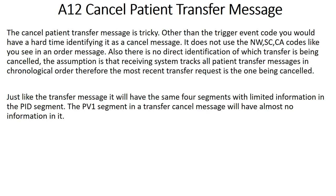The A12 cancel patient transfer message is a little tricky. Other than the trigger event code, you'd have a hard time identifying it as a cancel message — it doesn't use NW or SCA codes like you see in an order message. There's also no direct identification of which transfer is being canceled. The assumption is that the receiving system tracks all patient transfer messages in chronological order, so the most recent transfer request is the one being canceled. It has the same four segments with limited information in the PID and PV1.